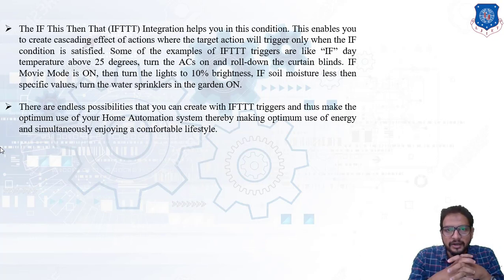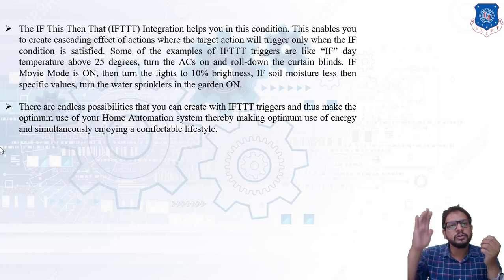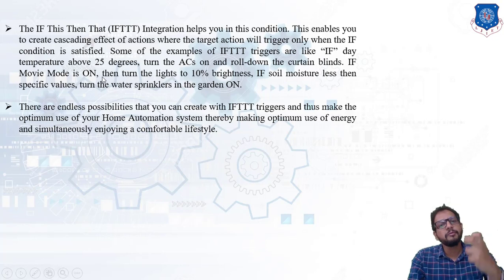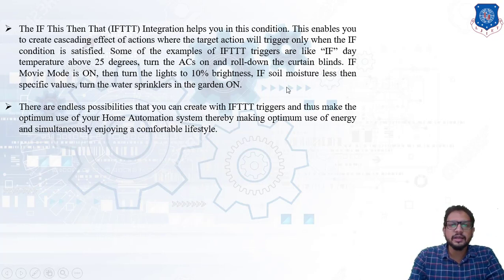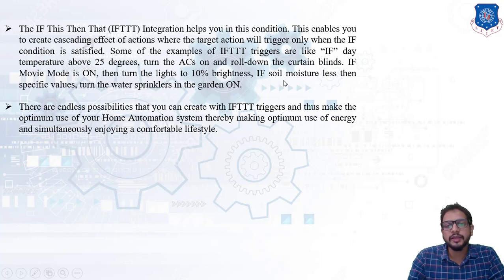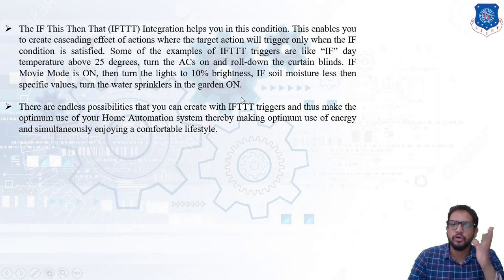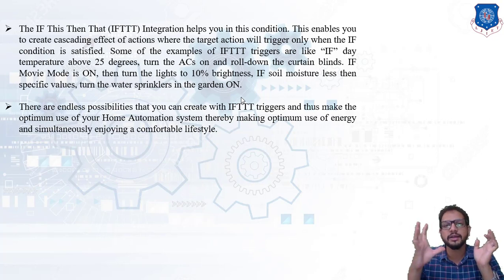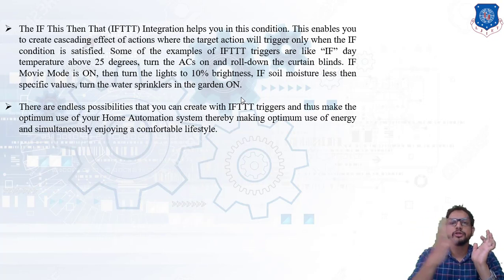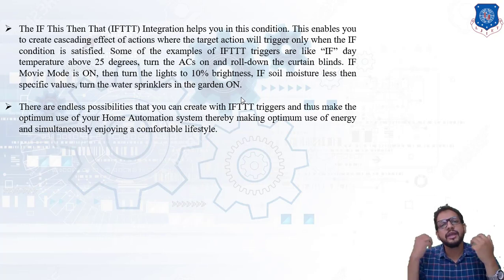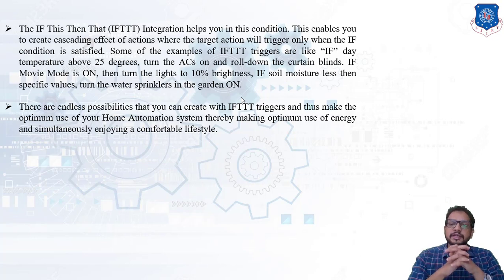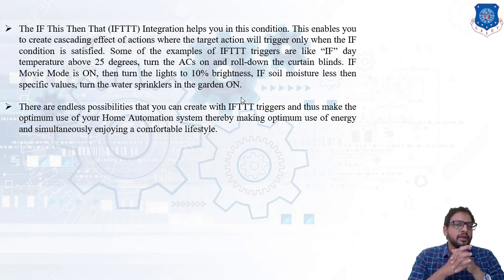For gardening purposes, we can also use a cyber physical system. A soil sensor can be installed in the soil: if soil moisture is less than a specific value, then turn the water sprinkler on. When dryness of the soil occurs, the system automatically handles the sprinkler and supplies water to the plant. There are endless possibilities with IFTTT triggers, making optimum use of the home automation system, conserving energy, and simultaneously enabling a comfortable lifestyle.